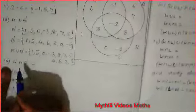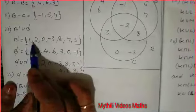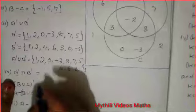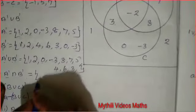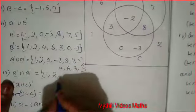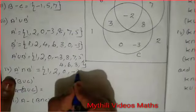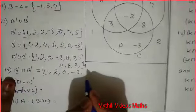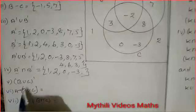Fourth question: A' intersection B'. For intersection, we write only the common elements between A' and B'. Common elements are: 1, 2, 0, and -3. So A' intersection B' = {1, 2, 0, -3}.